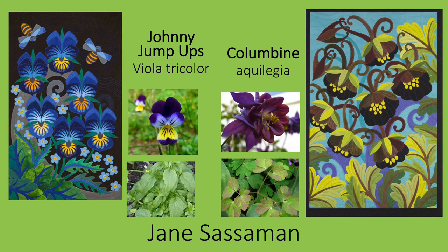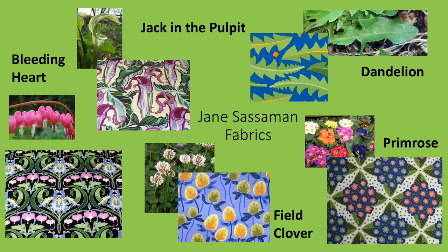Here are several more of Sassaman's quilts. Just as in her earlier iris quilt she made the beard a focal point, she draws one's eye immediately to the dramatically veined petals in her johnny jump-ups. In the columbine quilt, she has turned the curving spurs or modified petals of the flower into dramatic spirals and captured the brilliant contrasting yellow of the anthers. I mentioned earlier that Sassaman also designs fabrics. Here are fabrics she has designed based on the bleeding heart, the jack-in-the-pulpit, the dandelion leaf, the primrose, and field clover. Each is a fascinating treatment of the particular plant.